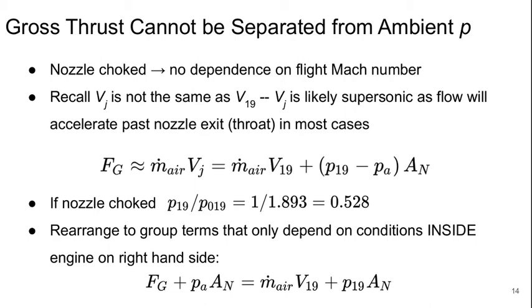So in general, under this choke condition, the gross thrust cannot be separated from the ambient pressure. So the nozzle is choked, so there's no dependence on the flight Mach number. But remember that the jet velocity is not the same as V19. The jet velocity is very likely supersonic as the flow is going to continue to accelerate past the nozzle exit throat.